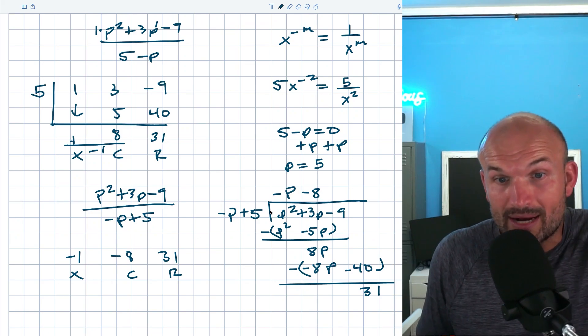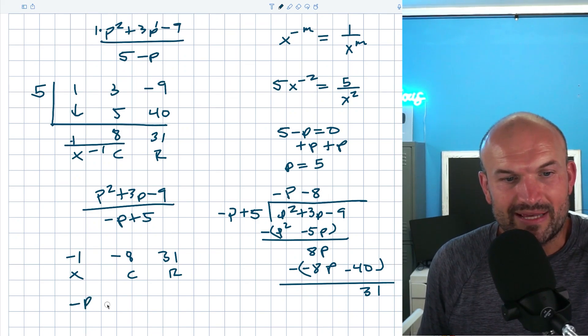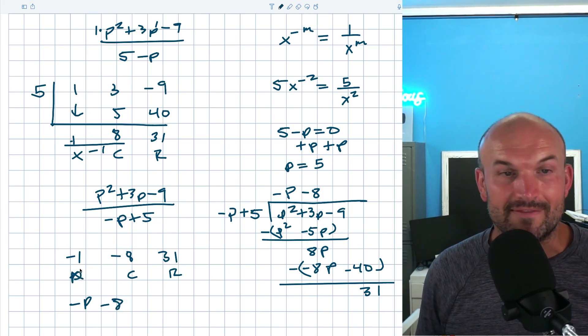So that's my remainder, my constant, and that's my linear term. Therefore, my final answer, which we already know is going to be, which we already know from our long division, is a negative p minus 8. And again, because that's really not an x, that's actually supposed to be a p. But there you go, ladies and gentlemen.